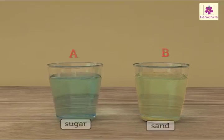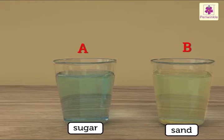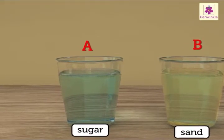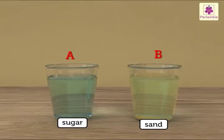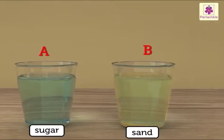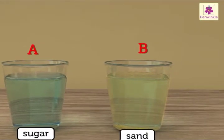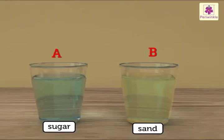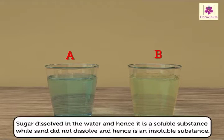We can see that the water in glass A, in which we added sugar, is clear and there is nothing at the bottom. While the water in glass B, in which we added sand, is cloudy and there is matter at the bottom. Sugar dissolved in the water and hence it is a soluble substance, while sand did not dissolve and hence is an insoluble substance.